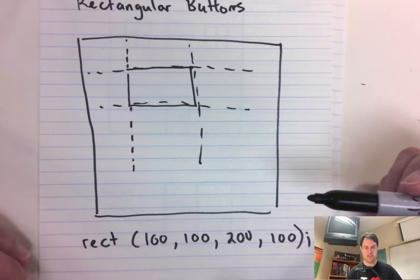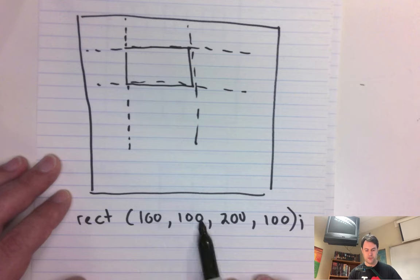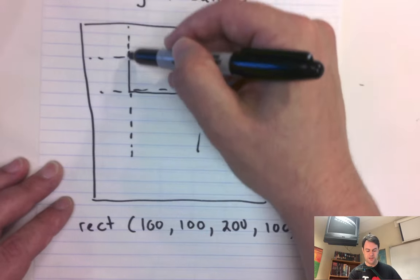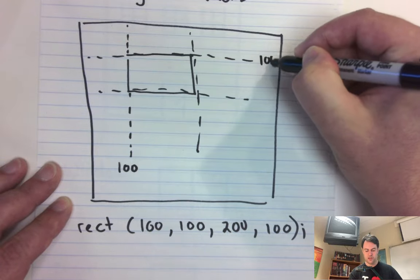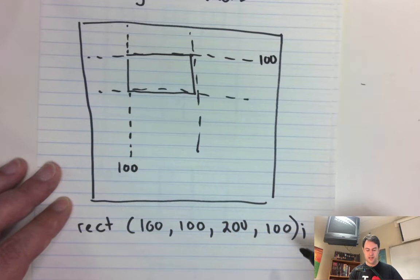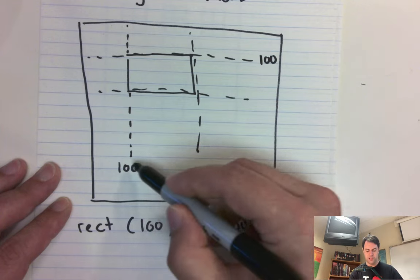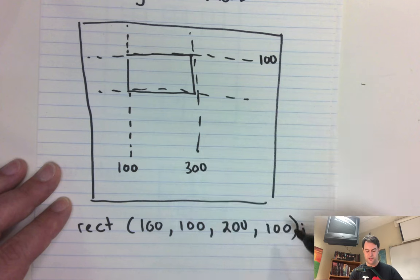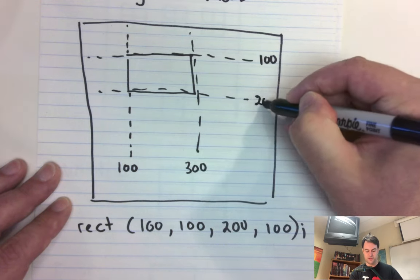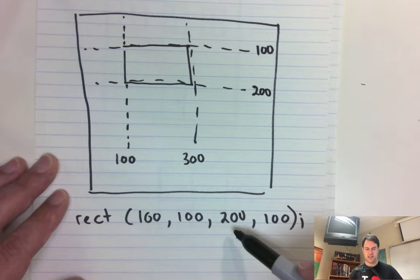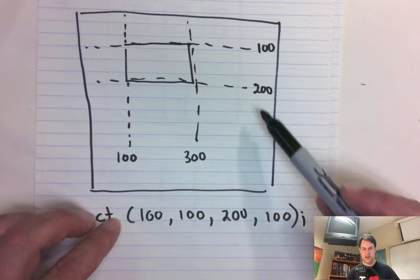Before we do that, we should probably check and see what these numbers are. So if this is drawn at 100, 100, that means this x-coordinate here is 100. And this y-coordinate here is 100. And if we're looking at the width is 200, that means that this number is 300. And if the height is 100, that's 100 down from here, so that's 200. We're basically taking these numbers and adding them to their counterparts to get the other side.